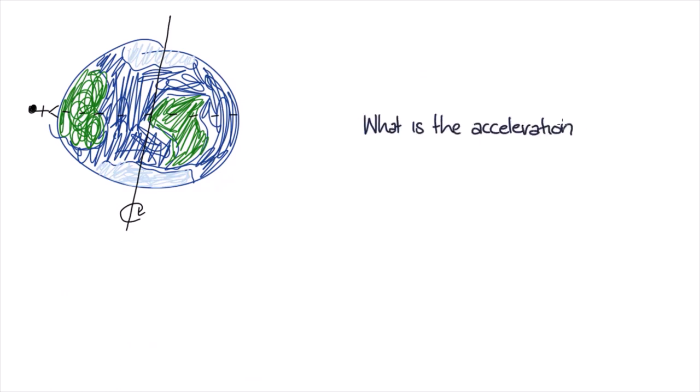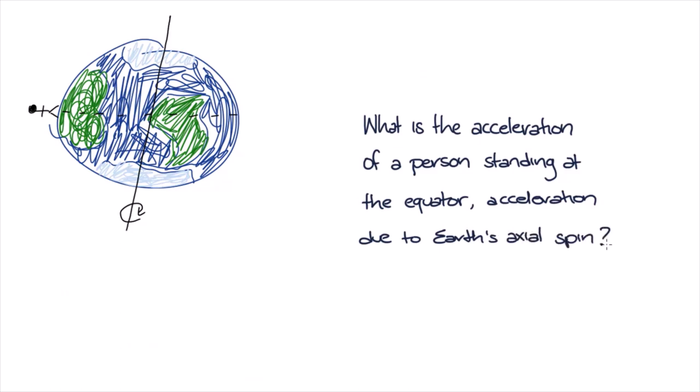Now, let's work through some exercises. Let's think about the effect that uniform circular motion has on people. So let's imagine somebody standing at the equator on Earth. The Earth is rotating about its axis once every day. What is the acceleration of a person standing at the equator due to the Earth's axial spin?